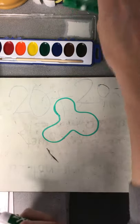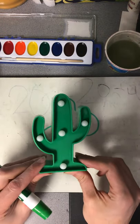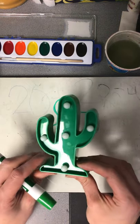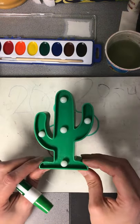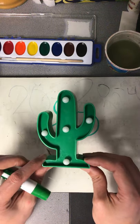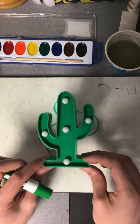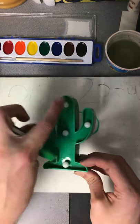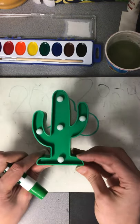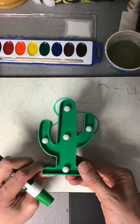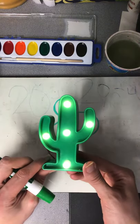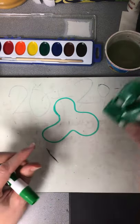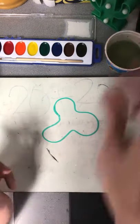One of my favorite shapes is a cactus — cacti, I guess. I love them. If you look at a cactus, it is an organic shape. It is its own unique shape. It's not a square, it's not a circle, it's not a rectangle. It has some straight lines, it has some curved lines, but it is its own shape — an organic shape. This is my super cool cactus, and it is a good example of an organic shape.